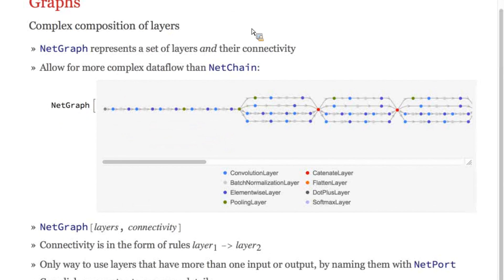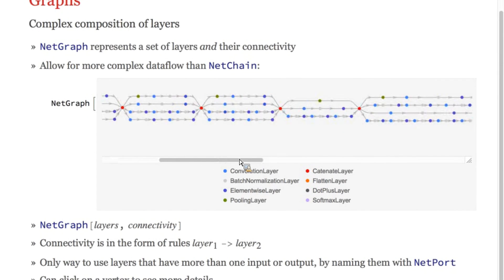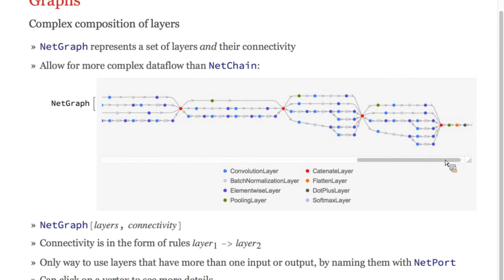For more complex tasks, we can use net graph, which lets you connect up layers in more complex ways. Here, I'm showing a fairly complex object recognition model called inception. This contains dozens of layers, but most graphs are much simpler than this. This is the kind of extreme case.